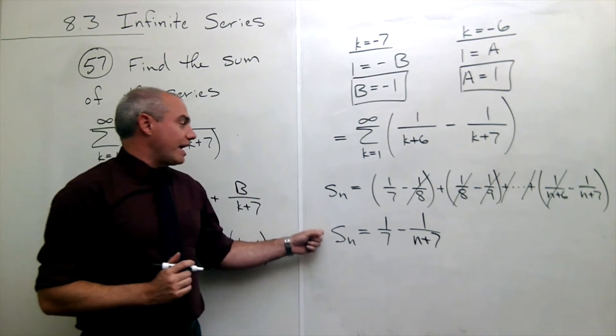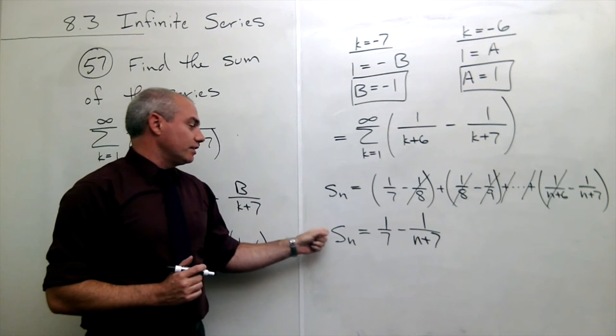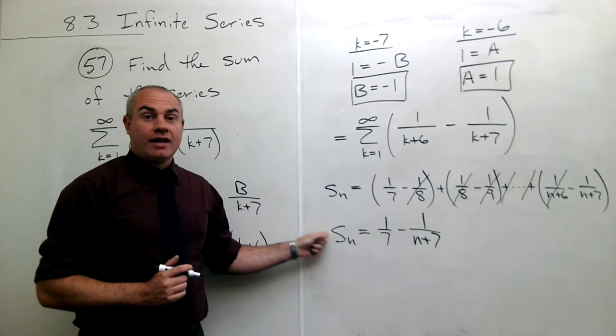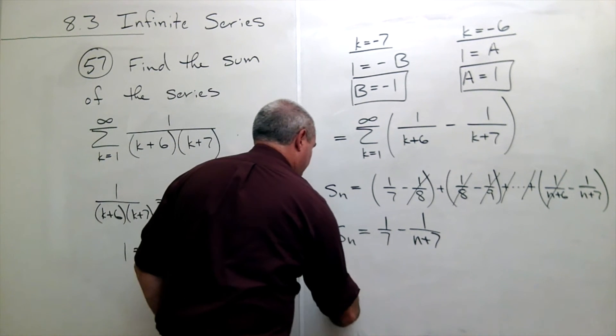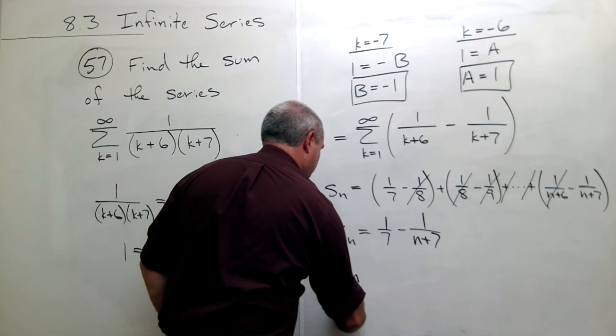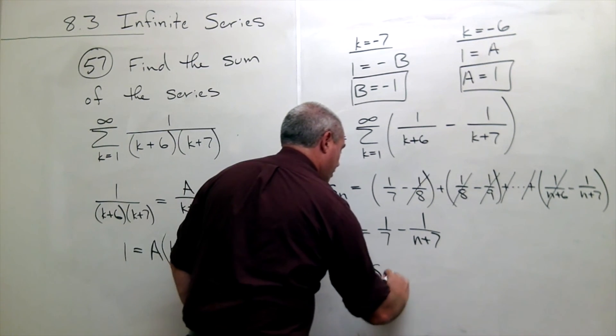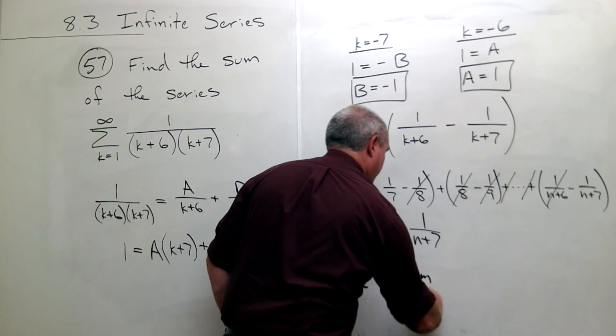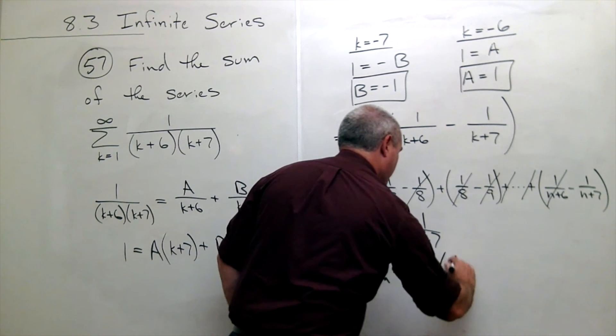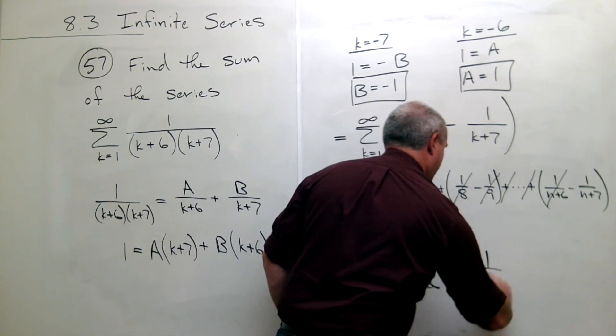So I found s sub n. If I want to find the sum of my series I need to take the limit of s_n as n goes to infinity. So let's do it. I take the limit as n goes to infinity of s sub n which is equal to the limit as n goes to infinity of 1/7 minus 1 over (n plus 7).